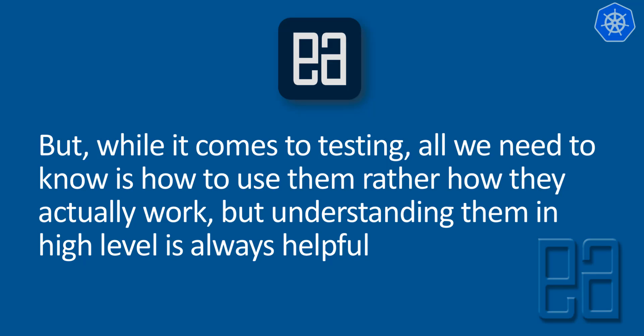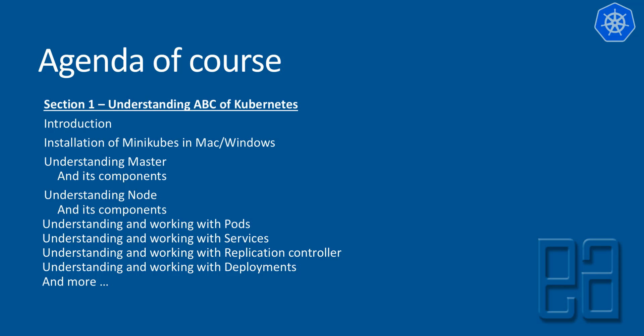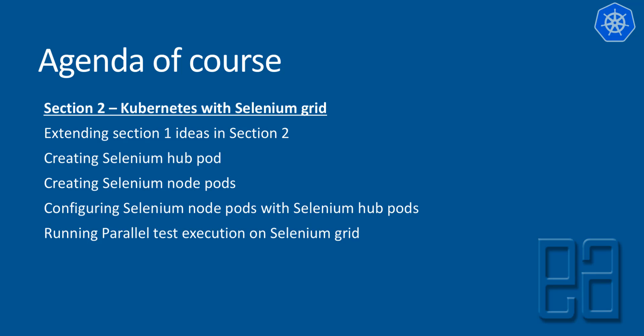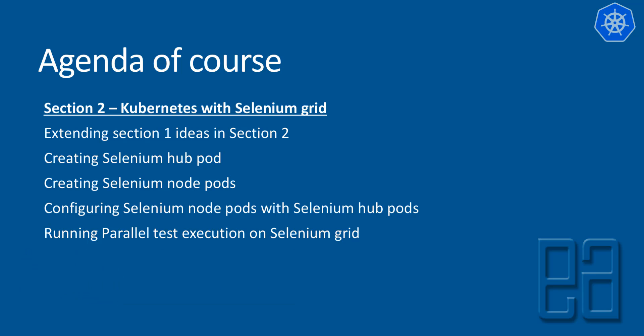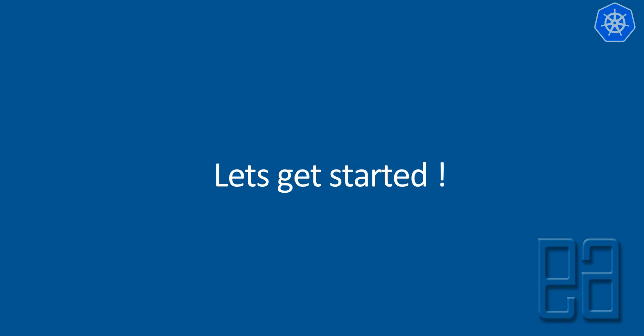About the course agenda — there are two sections. Section one covers understanding the ABCs of Kubernetes: introduction, installation of Minikube on Mac and Windows, understanding masters and nodes, working with pods, services, replication controllers, and deployments. Section two extends those ideas: creating Selenium Hub pods, creating Selenium Node pods, combining Selenium Node pods with Selenium Hub pods, and running parallel test execution on Selenium Grid with Java. That's what we'll be discussing throughout the course — let's get started!